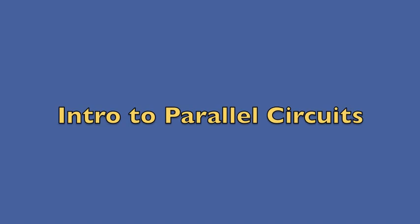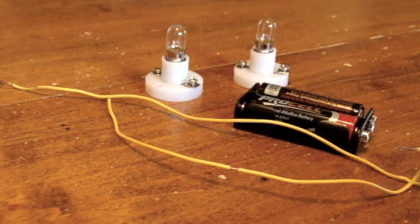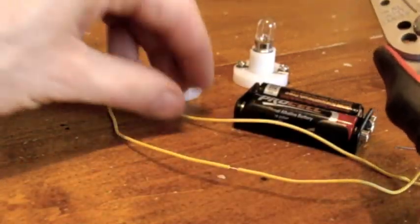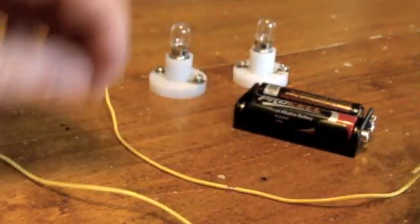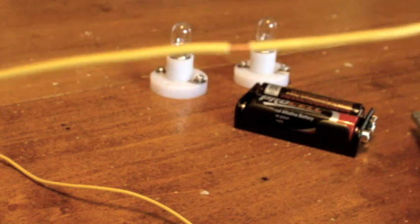Intro to Parallel Circuits. Alright, this time I want to connect two bulbs to my batteries, but I don't want to do it in series because if one bulb breaks, then the other one won't light up as well. We can fix that problem by using a parallel circuit, and I'm going to need a little bit of copper exposed in the middle of my wire, just like this.